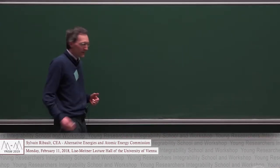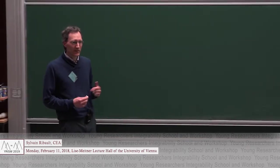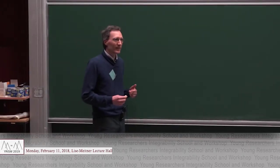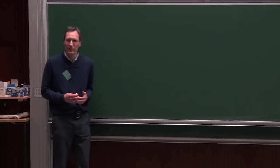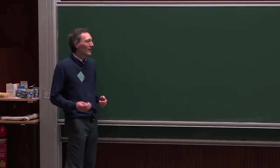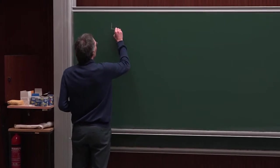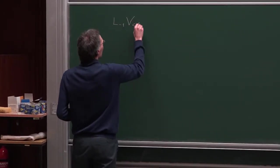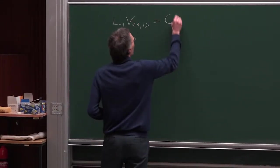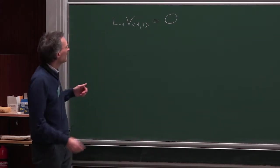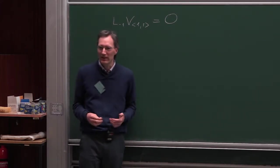Now what happens if we have a degenerate field? By definition, a degenerate field obeys an additional equation because it has a vanishing null vector. For example, we have a degenerate field V₁₁, which is killed by L₋₁, because it has a null vector at level 1.